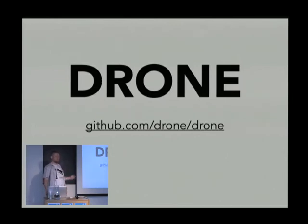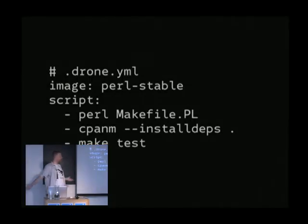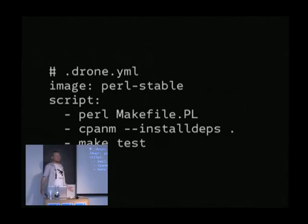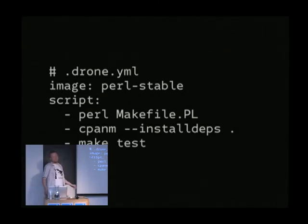The way you use it is you set it up to listen to your GitHub repository, and then you add a file to your project called drone.yml, which you put into your GitHub repository, and that tells Drone how to run tests. You tell it which image to use — you can create your own Perl base image in Docker and it will use that.